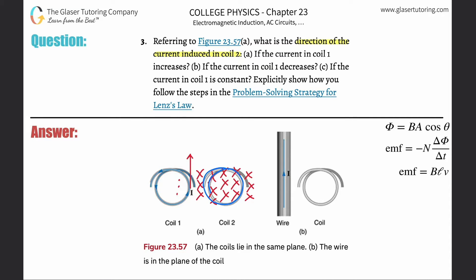The induced current will produce a magnetic field that opposes the increasing magnetic field — it opposes the change. As the original field increases, there are more and more x's into the page. So a current will be generated in this wire to oppose that increasing magnetic field going into the page. The only way to do that is with an increasing magnetic field coming out of the page.